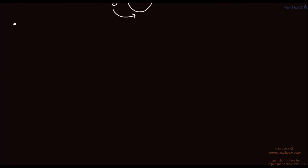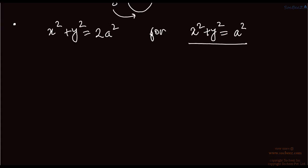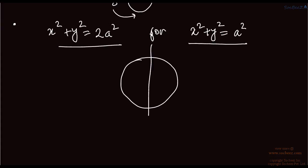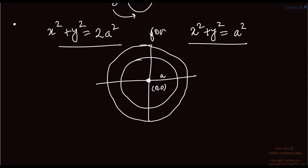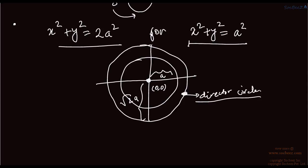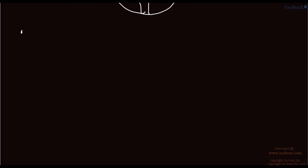The next point is the director circle. The director circle is x squared plus y squared equals 2a squared for the circle x squared plus y squared equals a squared. If you have a circle with center (0,0) and radius a, and you draw a concentric circle with the same center but radius root 2 times a, that is called the director circle. In JEE, questions are asked directly — find the director circle or find the value of a given the radius of the director circle. Easy questions are asked from this topic.